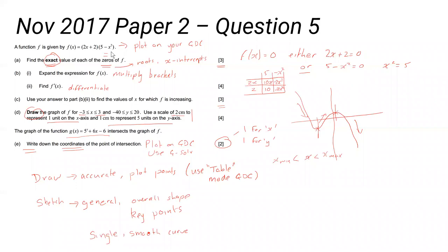Now I would recommend you plot this on your GDC to see where they are, and you should see when you plot it that you end up with three of them, hence the three marks. You could just use g-solve and scroll along to get all three, and that will be fine except it won't give you the exact values.